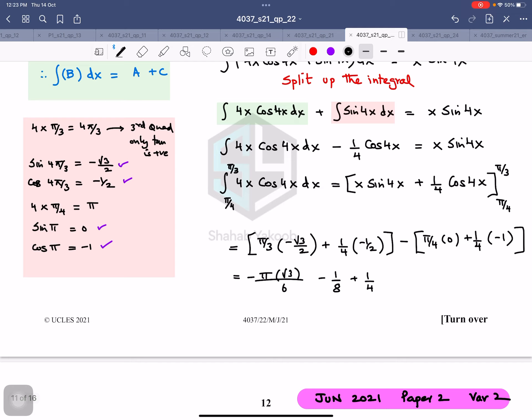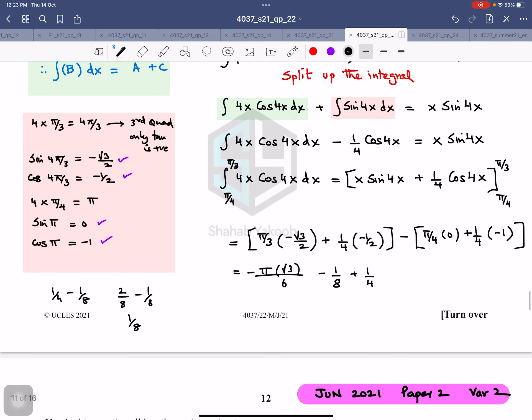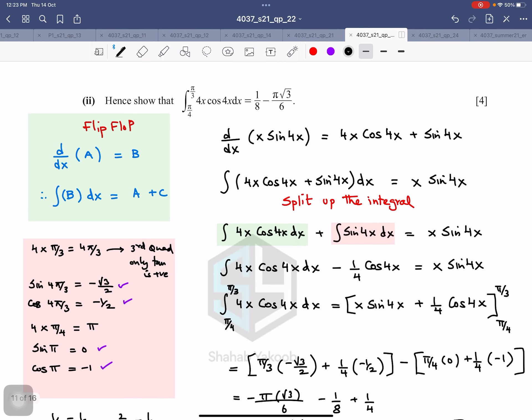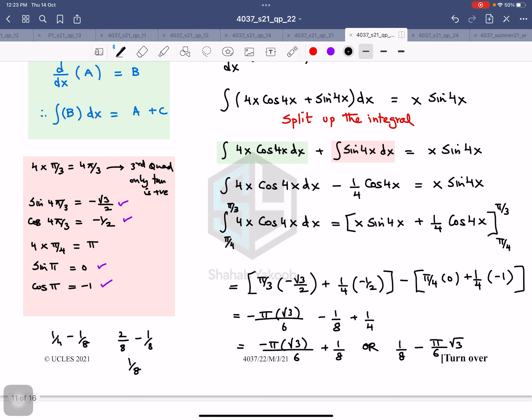So, therefore, this is one-fourth minus 1/8, which is 2/8 minus 1/8, which is simply 1/8. So, let me just double-check. This is minus. This is √3/6, and this is plus 1/8. Change the sides so it looks neater. This is 1/8 minus π√3/6. Is that the answer? Yes, that is the answer.